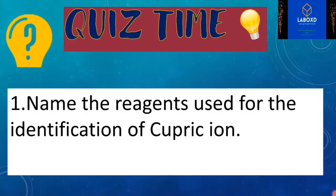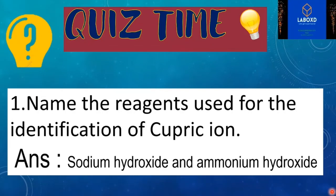It is time for quiz. Name the reagents used for the identification of cupric ion. Sodium hydroxide and ammonium hydroxide.